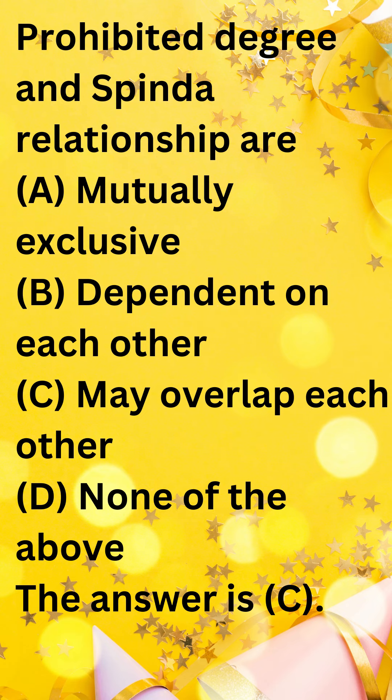However, there are also many cases where prohibited degree and sapinda relationship do overlap. For example, a person cannot marry their first cousin because they are both sapindas and in a prohibited degree of relationship. Therefore, the answer is C — prohibited degree and sapinda relationship may overlap each other.